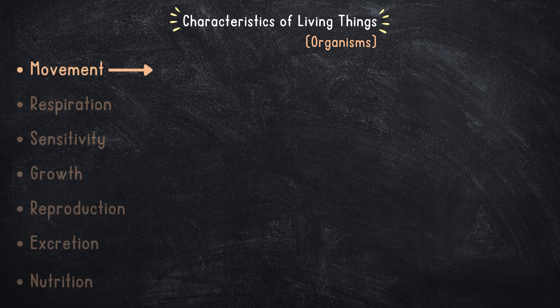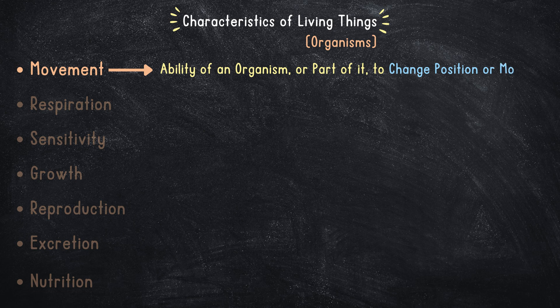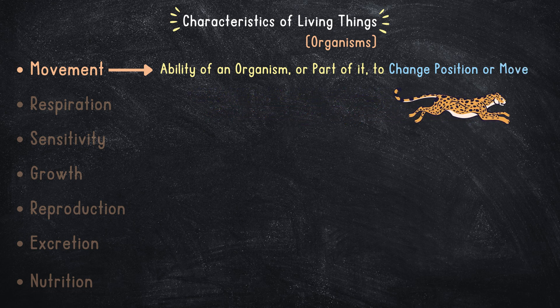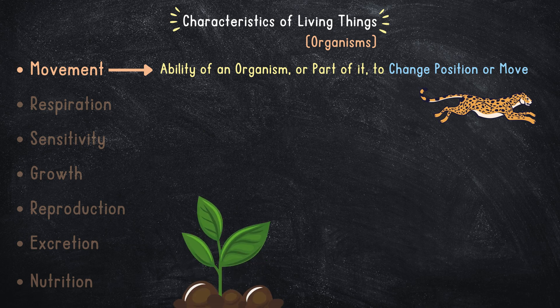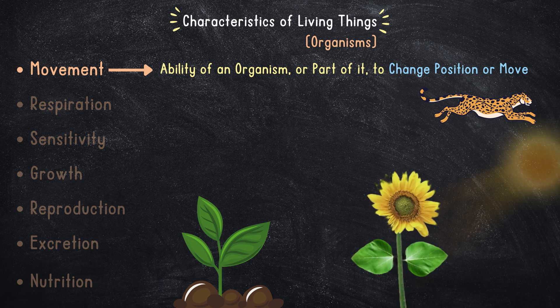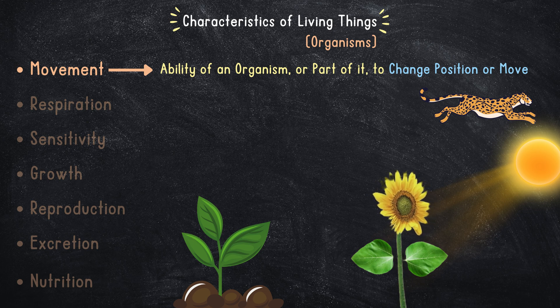Movement is the ability of an organism, or part of it, to change position — in other words, to move. For example, animals like cheetahs exhibit rapid and obvious movement as they hunt their prey. On the other hand, some organisms like plants may not seem to move, but they actually do. For example, sunflowers turn their heads to follow the sun.